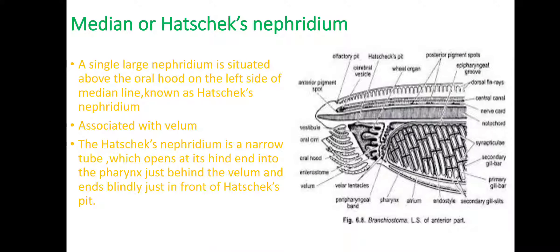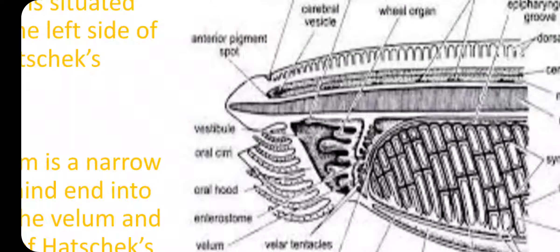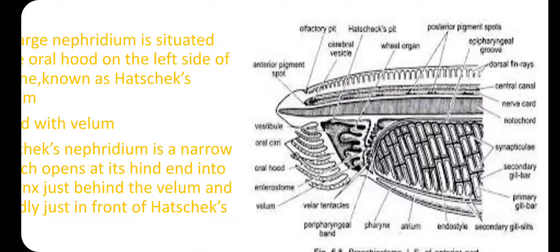Next is the Hatschek's nephridium. A single large nephridium is present here — the Hatschek's nephridium. You can see here the Hatschek's pit. This nephridium is open into the cavity present here — the Hatschek's pit. It is single and it is median. It is present above the roof of the pharynx, on the roof of the pharynx. Inside it is the left dorsal blood vessel.